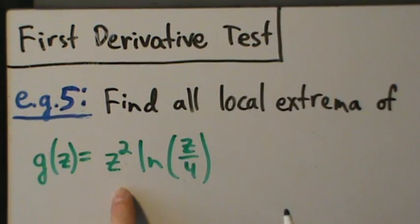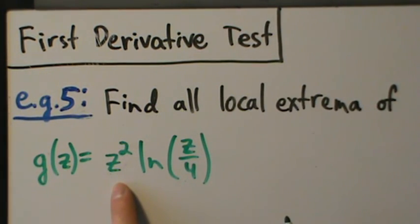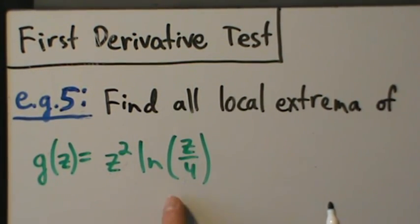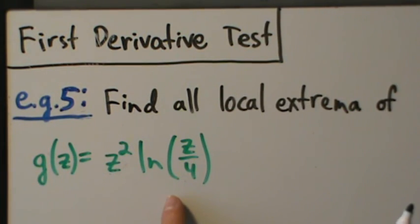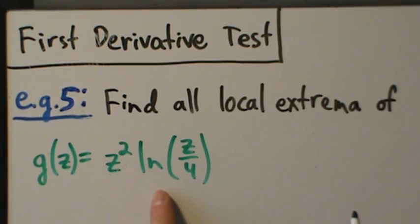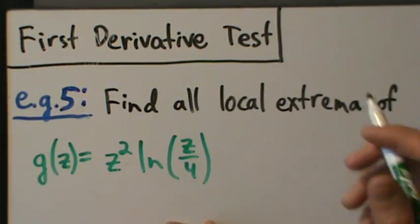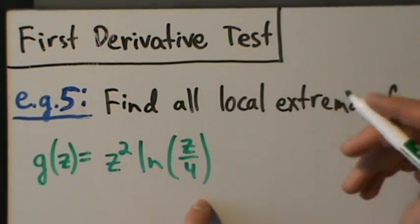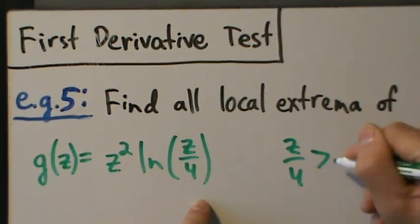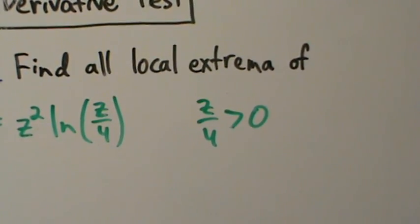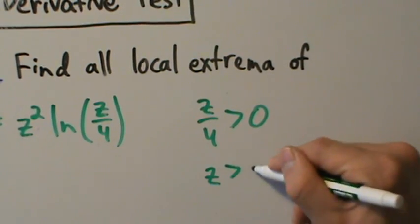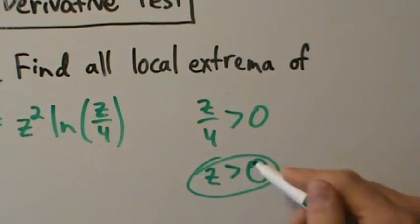Z squared — nothing's wrong with that; any value of z will work there. We can take any number and square it. But for natural log of z over 4, one of the domain restrictions is you can't take a log of 0 and you can't take a log of negative numbers. Anything you take a log of has to be strictly positive. We're taking a log of z over 4, so z over 4 has to be strictly greater than 0. Multiply both sides by 4 and you get z is greater than 0. That is our domain.